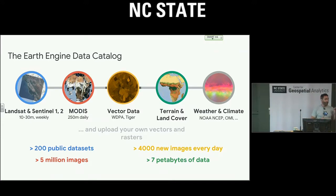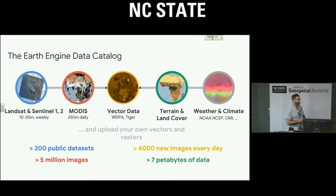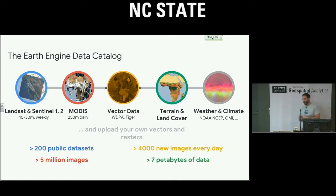If you have your own private data you want to analyze in Earth Engine alongside the public catalog, you can do that by uploading images or tables. Those stay in your private account — we can't see them. It's the same type of security you have on your Gmail. You can easily share your data with friends and collaborators, or share them with the whole world. That's how you get stuff into your own private collection or into the public data catalog.